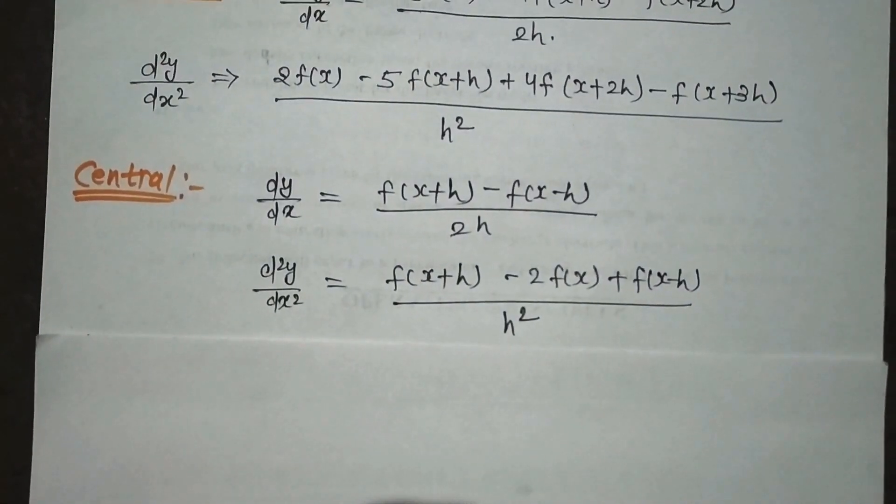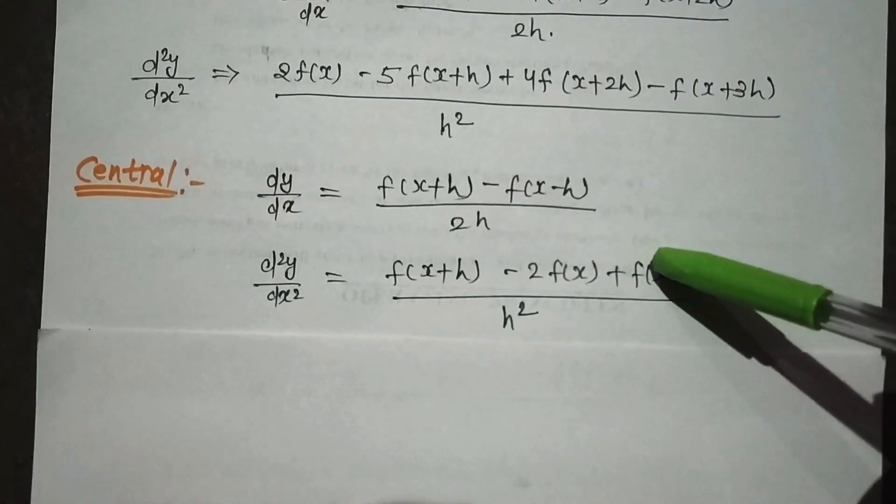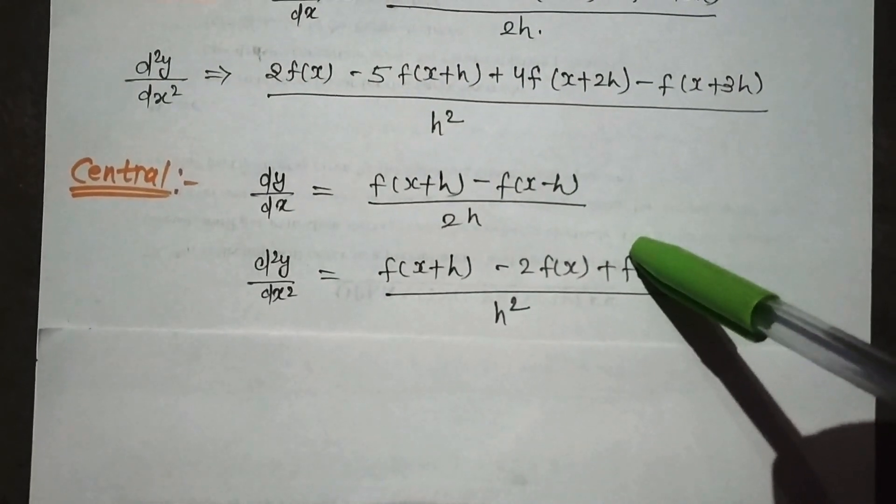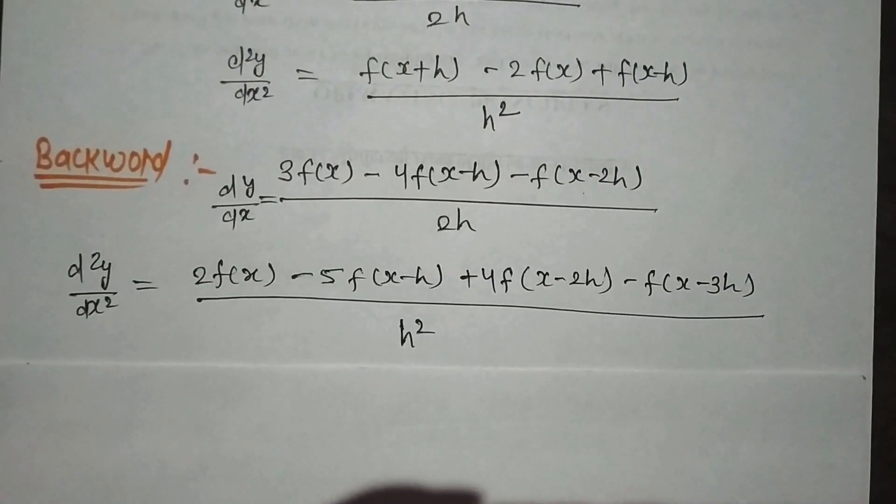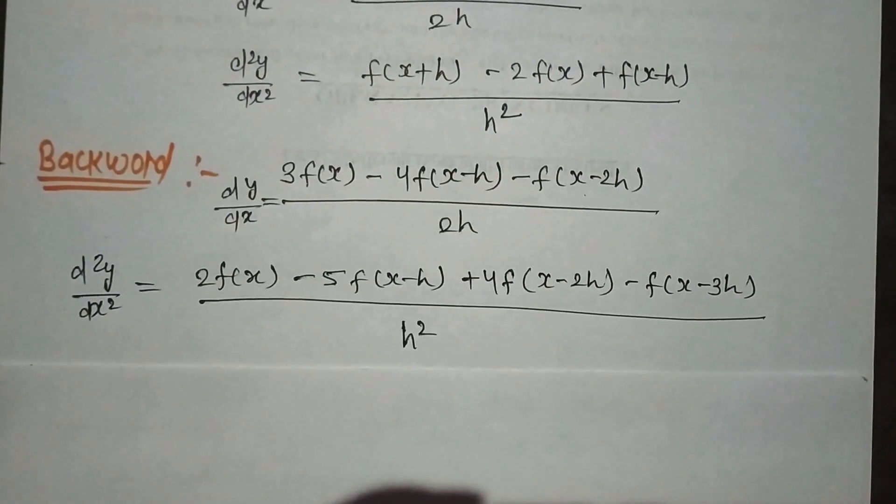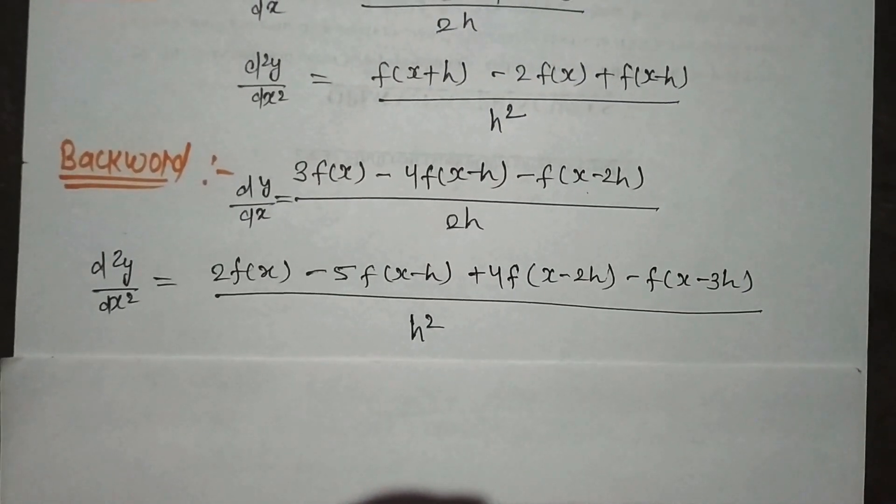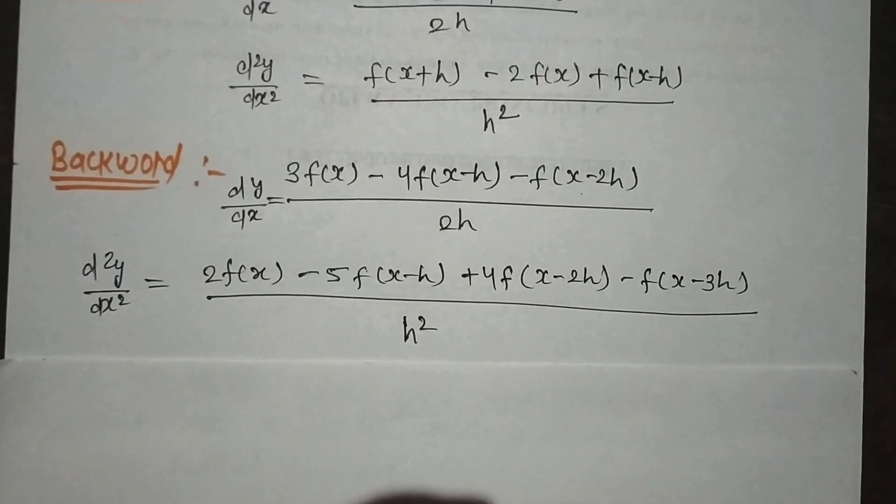This is the formula for the central numerical difference. So this is the first order and this is the second order. This is the formula for the backward numerical differentiation. So these are the three formulas: backward, forward and central. Let's start the question.